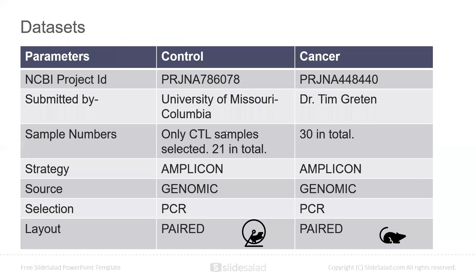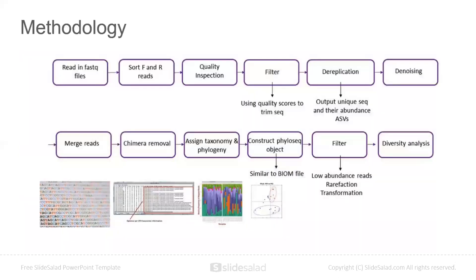The datasets used are not from the same project — they are from different projects. The control dataset belongs to the University of Missouri, Columbia, and the cancer dataset was submitted by Dr. Tim Brettett. The control dataset contains normal gut microbiota sequences of Mus musculus species, whereas the cancerous samples contain the gut microbiota sequences of Mus musculus species affected by liver cancer.